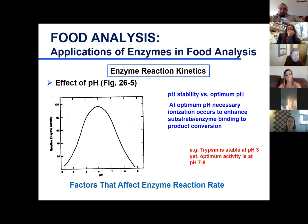That's why when I used trypsin as a PhD student, I would always make up the trypsin in a hydrochloric acid solution, hold it there until I was ready to use it, then add it to a sample buffered at pH seven to eight so the trypsin could act on the substrate.